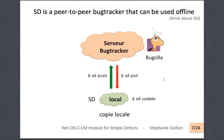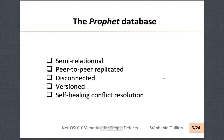That's the main idea behind Simple Defects. It's using the Prophet database, which is a semi-relational database — just think about NoSQL, for example. It's peer-to-peer replicated, so it's disconnected and versioned. And there is a system of self-healing conflict resolution when you want to synchronize several versions of a tracker database.